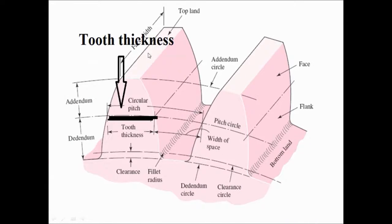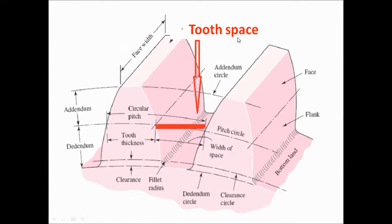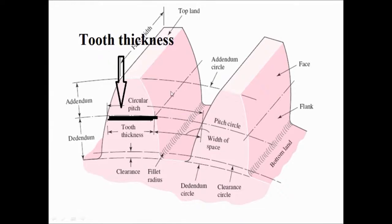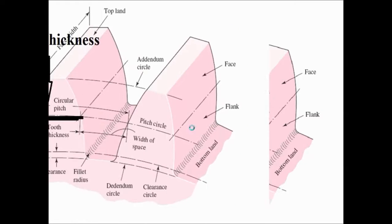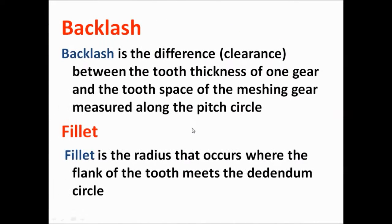You can watch in the image the tooth thickness and the tooth space. Backlash is the clearance between the tooth thickness of one gear and the tooth space of the mating gear, measured along the pitch circle.